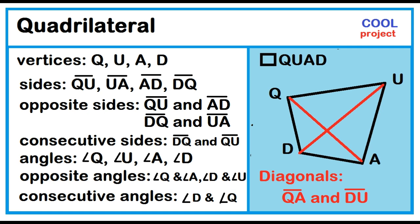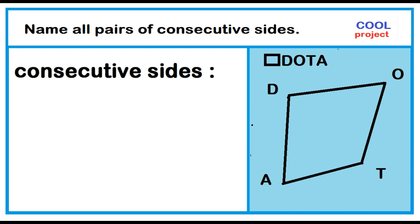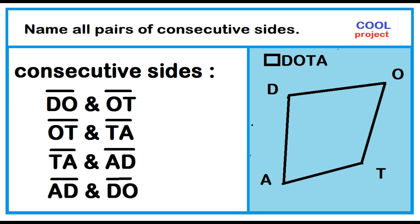Try this. Name all pairs of consecutive sides. The consecutive sides are: segment DO and segment OT, segment OT and segment TA, segment TA and segment AD, and segment AD and segment DO.